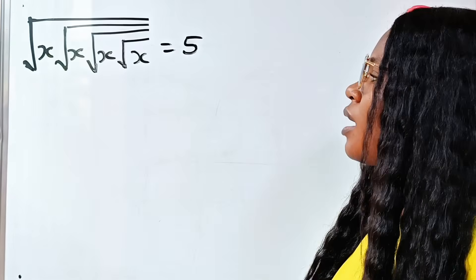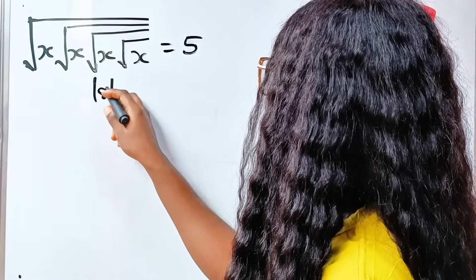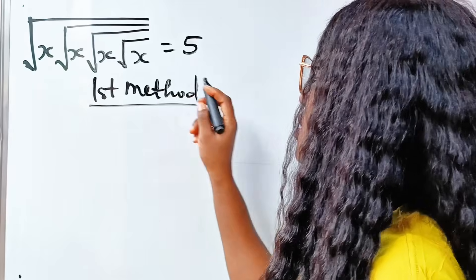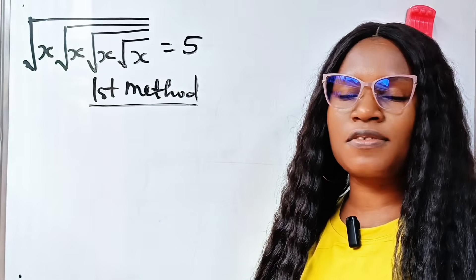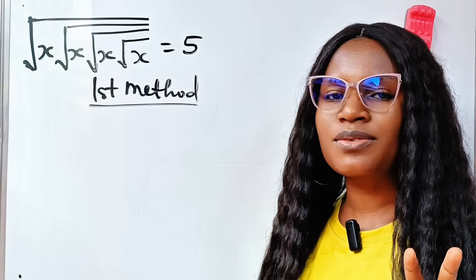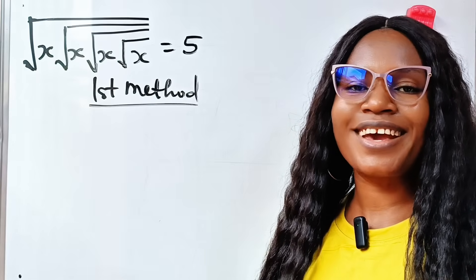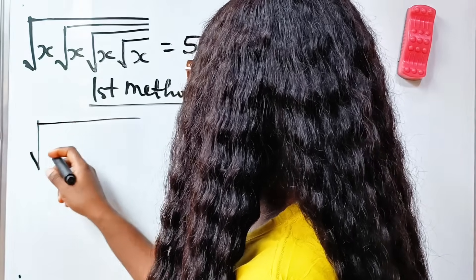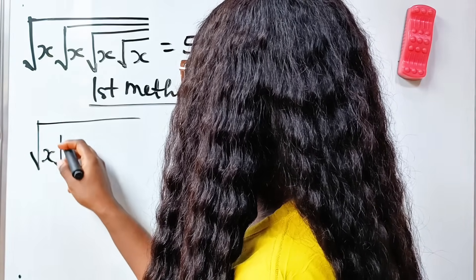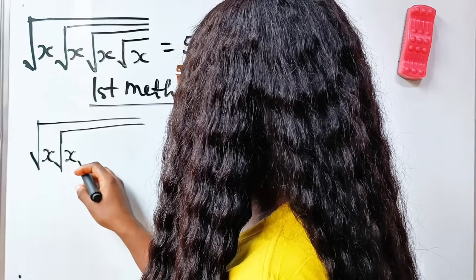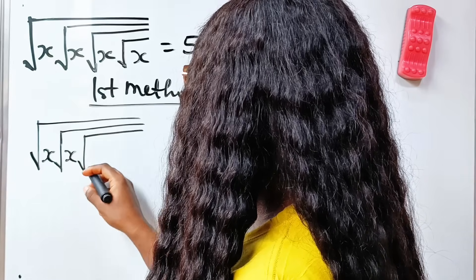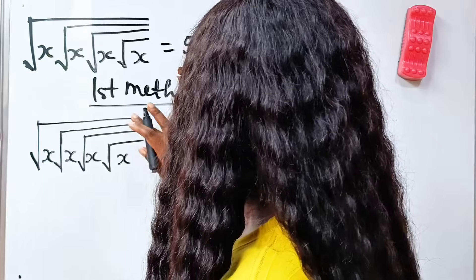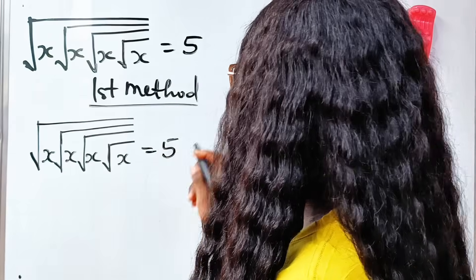Now, first method. The second method is an amazing one, and I would like you to watch to the end. So we have square root of x, square root of square root of x, then square root of square root of square root of x, and then square root of square root of square root of x, equal to 5.